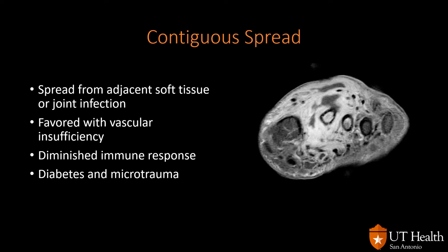The second mode of spread is contiguous spread associated to ulcers — in this case a diabetic foot with an ulcer, with phlegmon and abscess extending into the second and third metatarsal diaphysis with bone marrow enhancement consistent with osteomyelitis. Contiguous spread is common in diabetes because of diminished immune response, development of ulcers, and loss of sensation, where micro-trauma leads to ulceration and infection.